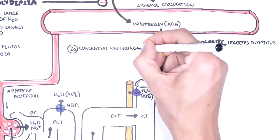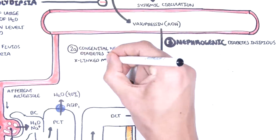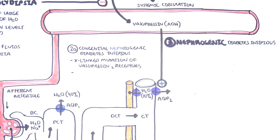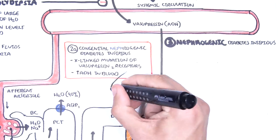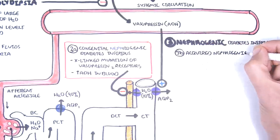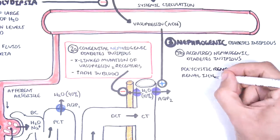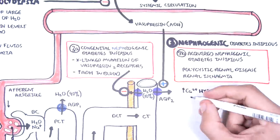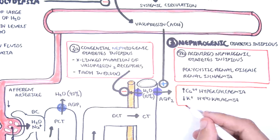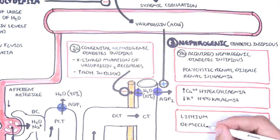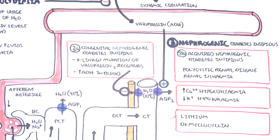Specific causes of nephrogenic DI include congenital nephrogenic diabetes insipidus, which is an X-linked mutation of the vasopressin 2 receptor, meaning vasopressin is increased in blood but has no effect on the distal convoluted tubules or collecting duct cells. Acquired causes include renal disease such as polycystic kidney disease, electrolyte abnormalities such as hypercalcemia and hypokalemia, and medications such as lithium and demeclocycline, which can damage the nephrons and result in chronic kidney disease.